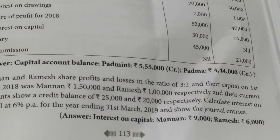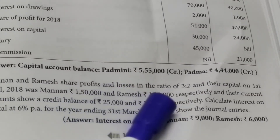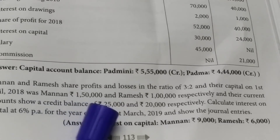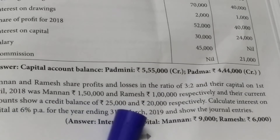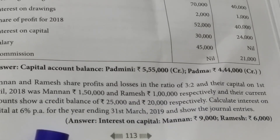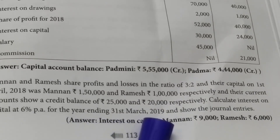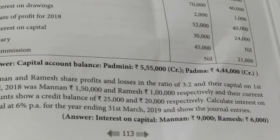Fifth exercise: Mannen and Dermesh share profits and losses in the ratio of 3 to 2. Their capital on 1st April 2018 was Mannen 1,50,000 and Dermesh 1,00,000 respectively. Their current account shows a credit balance of 25,000 and 20,000 respectively. Calculate interest on capital at 6% per annum for the year ending 31st March 2019 and show all the entries.